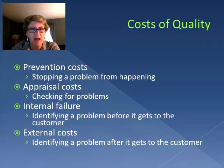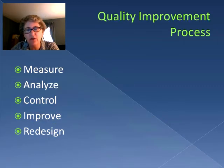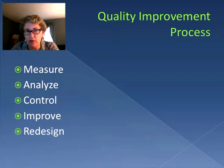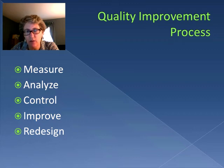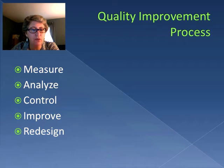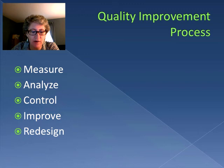So how do we improve quality? There's an overall quality improvement process where we measure everything — everything has to have a metric associated with it to make sure it's up to standard. We analyze it, we control our processes, and when they're controlled, we try to improve them and possibly redesign. That's the overall quality improvement process.